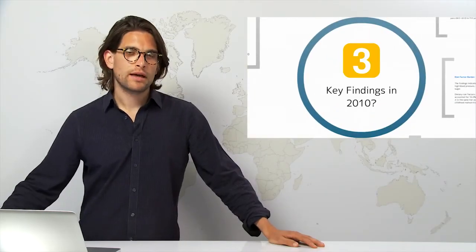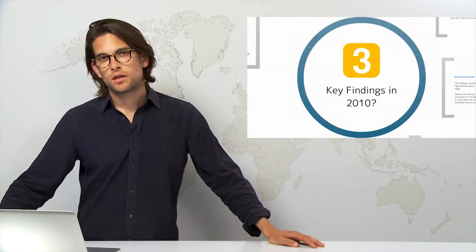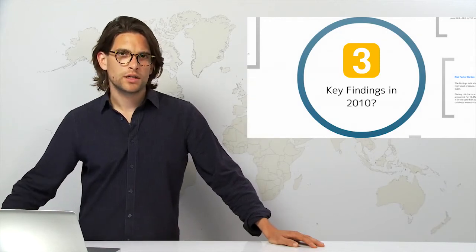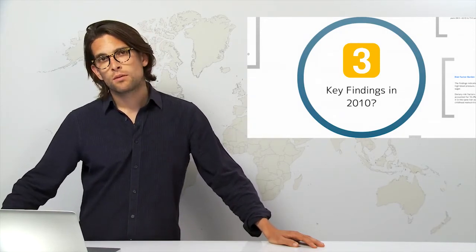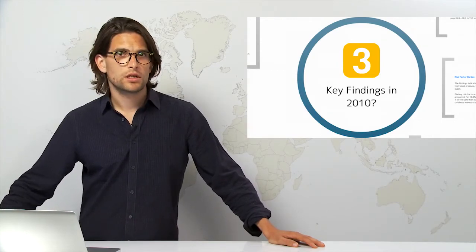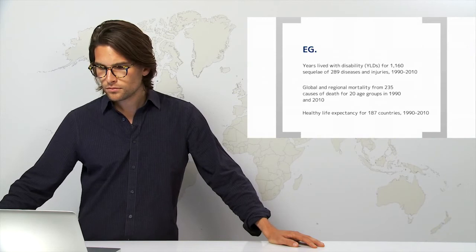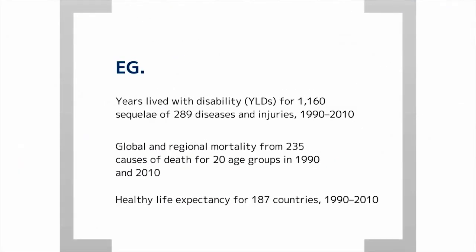So let's now skip forward and have a look at some of the key findings of the 2010 global burden of disease study and also compare these to the findings from 1990 and see how the world's morbidity, mortality measured through disability-adjusted life years has changed. So some of the findings of the 2010 global burden of disease study published in 2012 include years lived with disability for 1,160 non-fatal outcomes of 289 diseases and injuries from the 1990 to 2010 region. Also gives healthy life expectancies for more than 187 countries. So we've looked at how the global burden of disease study is structured and why it came about. Let's have a look at some of the findings.